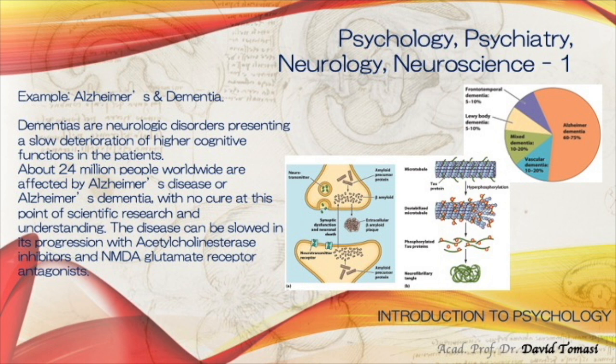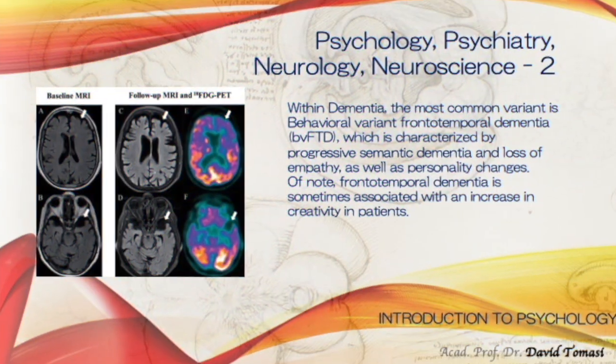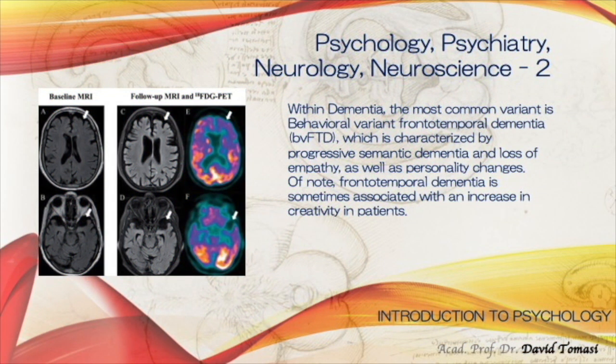Within dementia, behavioral variant frontotemporal dementia is the most common, and it is characterized by progressive semantic dementia, personality changes, and loss of empathy. This is connected with both personality disorders and the understanding of what language and cognition represent in terms of how we understand who we are as people.